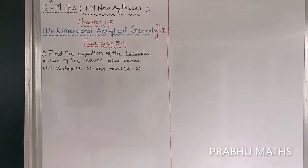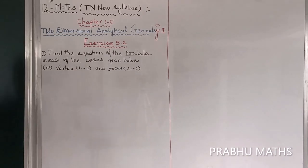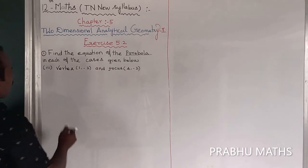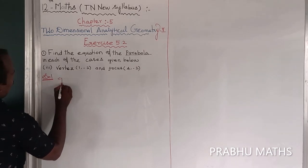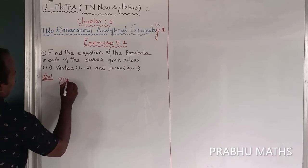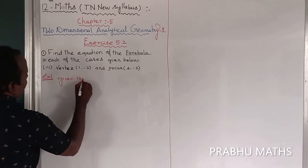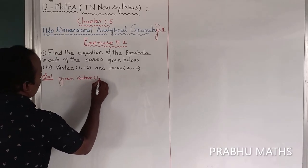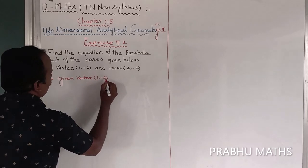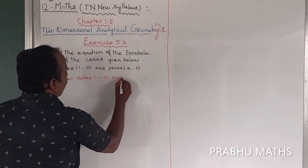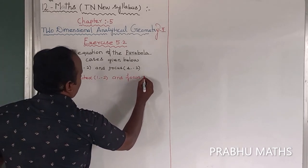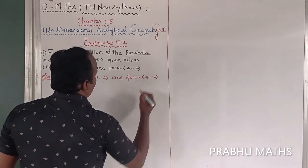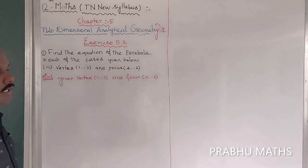X is 5.2, first sum, third subdivision. The given data is vertex and focus. The given data: vertex is (1, -2) and focus is (4, -2).